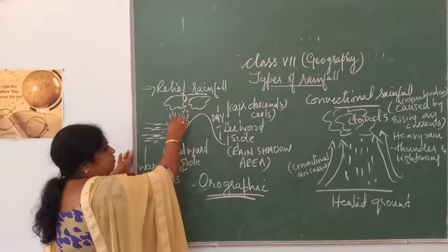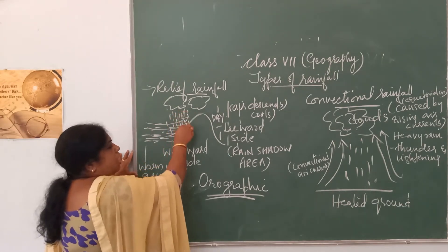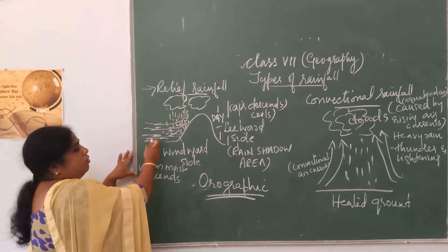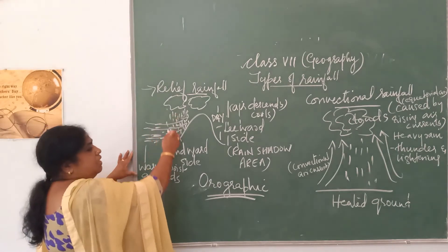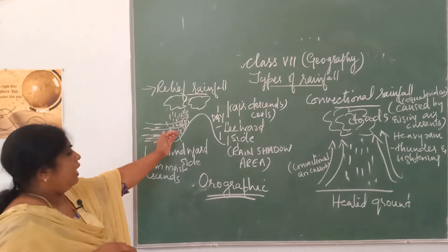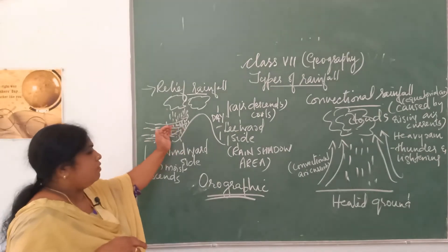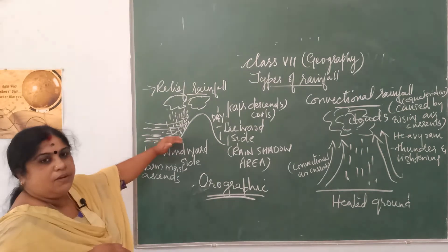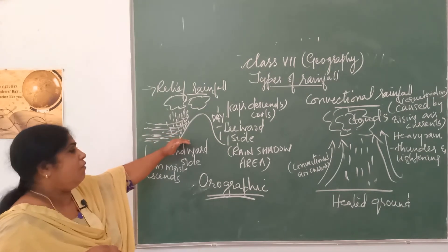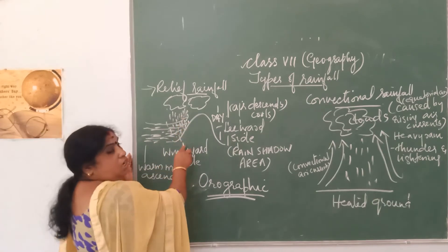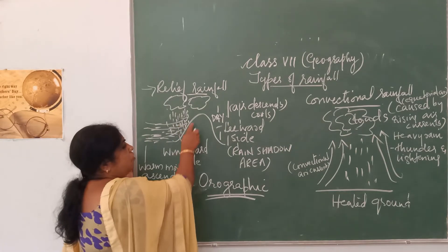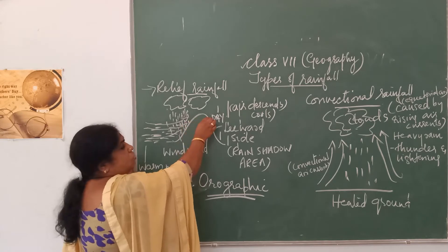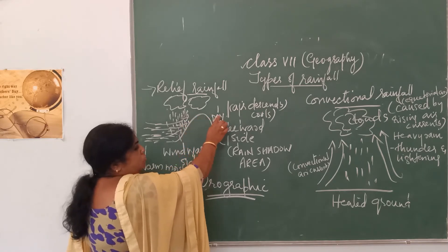The areas facing the sea, or areas which face the moisture-laden winds, receive very heavy rainfall. The area facing the sea or facing the moisture-laden wind is called the windward side of a mountain. The windward side is the side of the mountain which receives very heavy rainfall. After shedding all the moisture in the form of rainfall, the wind crosses the huge mountain.